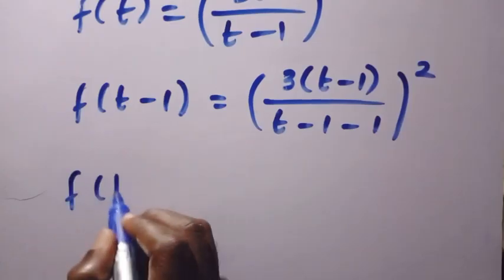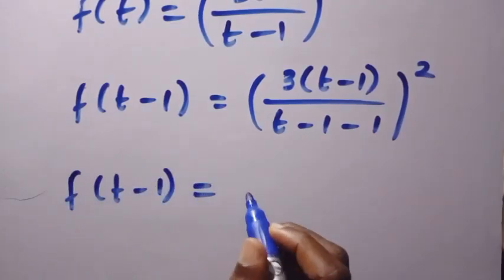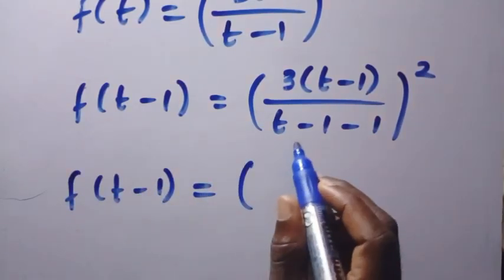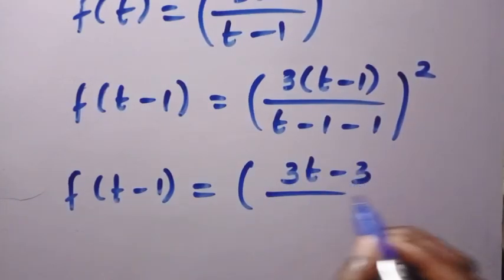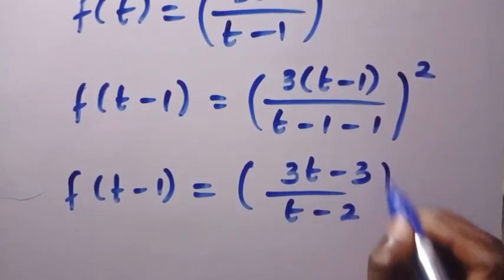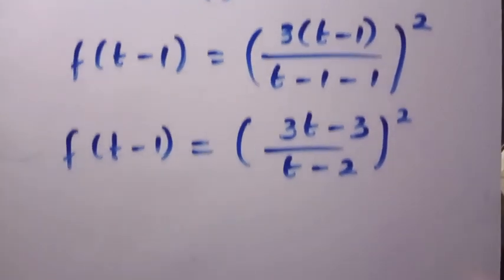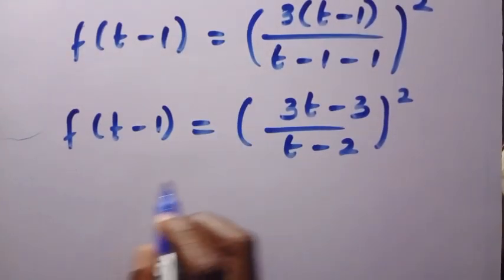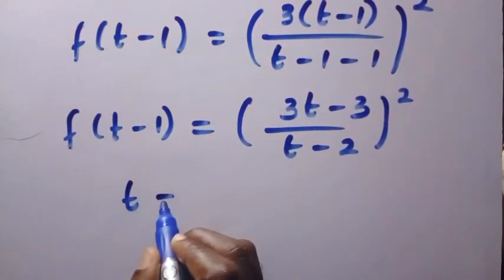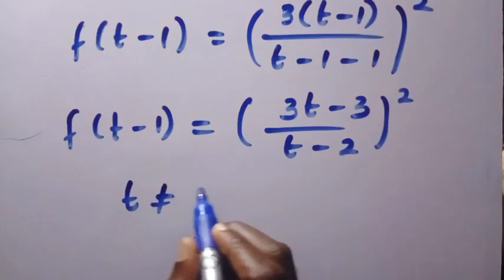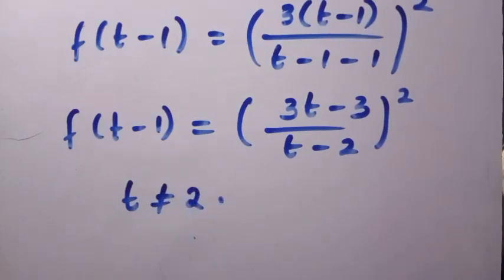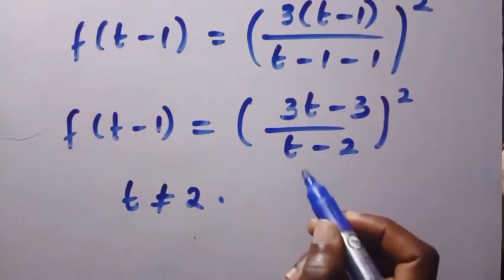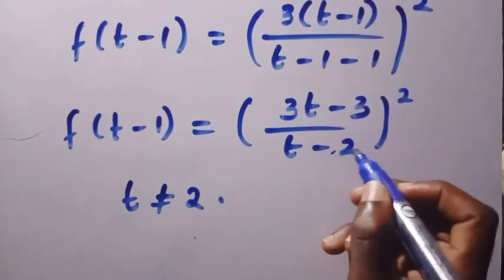As we have f of t minus 1 equals, so expand this, we have 3t minus 3 divided by t minus 2, all raised to the power of 2. But we have to note that t also is not equals 2, so for us not to have an undefined expression at this side. So, this is how to solve this.